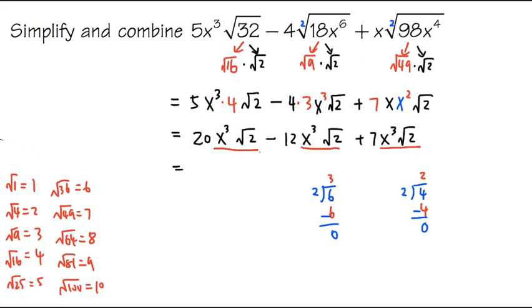So what should we do? Here we have 20, and then minus 12, and then plus 7. We're just going to add and subtract these numbers together. 20 minus 12 is 8. 8 plus 7 will give us 15. And then the term stays the same. We still have x to the 3rd power, and then we multiply by square root 2. So this right here will be the answer. 15x to the 3rd power times square root 2.